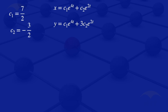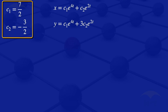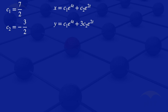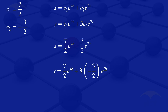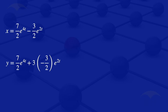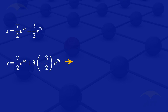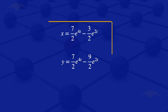Substituting C1 = 7/2 and C2 = -3/2 into our equations gives: x = (7/2)*e^(4t) - (3/2)*e^(2t). For y: y = (7/2)*e^(4t) + 3*(-3/2)*e^(2t), which simplifies to y = (7/2)*e^(4t) - (9/2)*e^(2t). Those are the solutions of the system given the initial conditions.